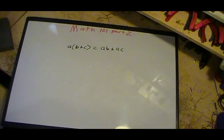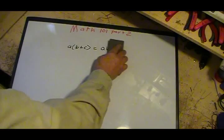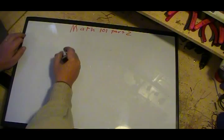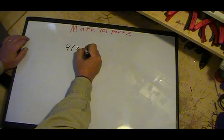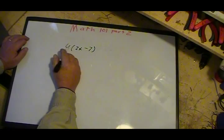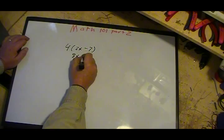So an example of that would be, take 4 times the quantity of 2x minus 7. Now we just distribute through. 4 times 2x is 8x, 4 times 7 minus 28, and we're good to go.